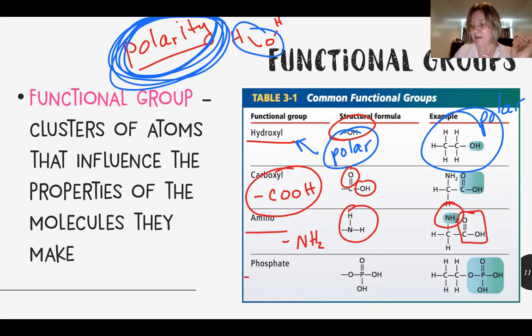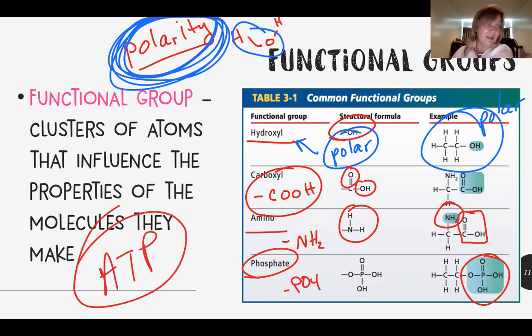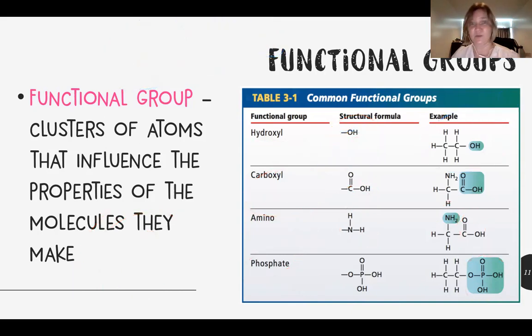And the last one is phosphate. Phosphate is PO4. A big function of phosphate is with ATP. ATP is adenosine triphosphate. And what happens is when you remove one of the phosphate groups, energy is released. So that's how energy works for your cells. That's functional groups.